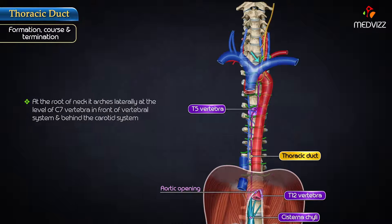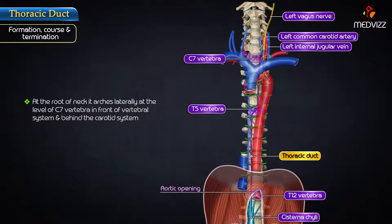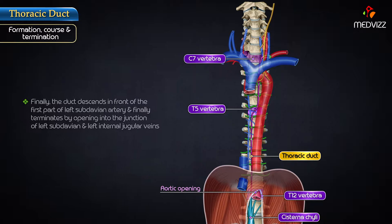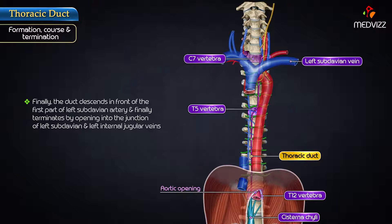At the root of the neck, the duct arches laterally at the level of the 7th cervical vertebra, in front of the vertebral system and behind the carotid system. Finally, the duct descends in front of the first part of the left subclavian artery and terminates at the junction of the left subclavian and left internal jugular veins.